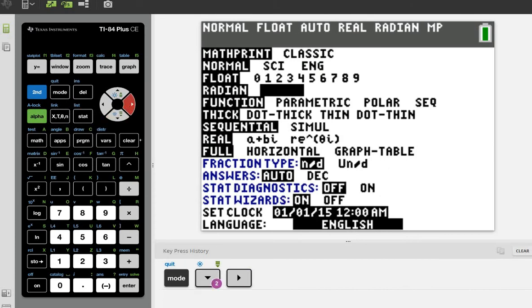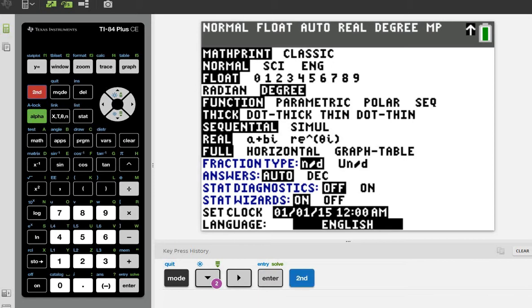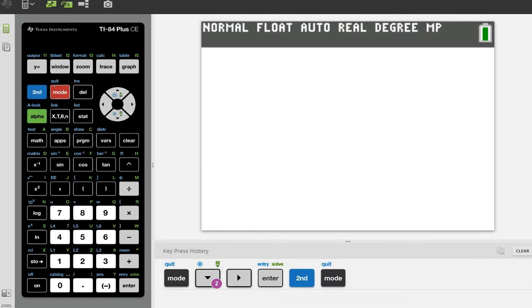So right now I'm in radians, so I'm going to change that to degrees. Once you change it, until you either clear your calculator or you manually change it, it will be in degree mode, so I only have to do this once. So now I'm going to hit second and quit to get out of here. So above mode it says quit.